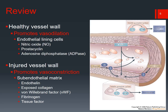Here we have a cross-sectional image of a blood vessel. In a healthy blood vessel, we have a number of substances responsible for maintaining that healthy blood vessel wall. In an injured blood vessel wall, we have a very opposite goal, and that is to vasoconstrict. A healthy vessel wall will promote vasodilation: we have nitric oxide released from our endothelial lining cells, which is a potent vasodilator; we have prostacyclin, similarly a vasodilator; and we have adenosine diphosphatase, which is an enzyme breaking down ADP.